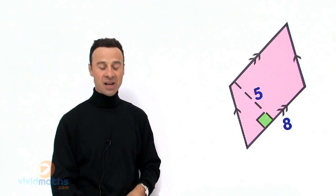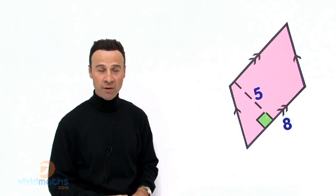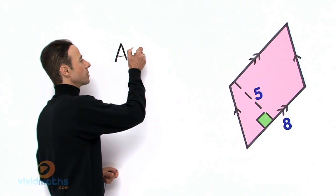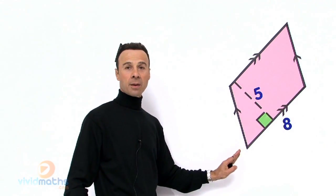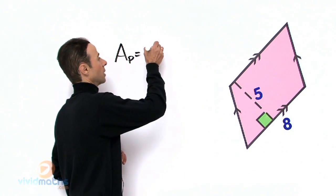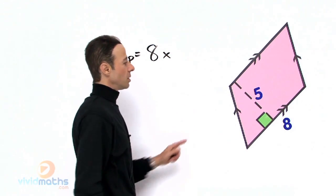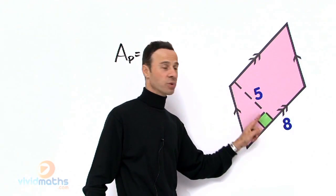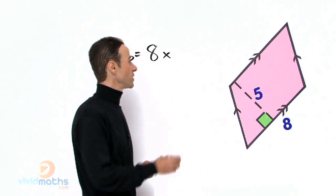Our job and our task is to work out the area of that. So area of a parallelogram, let's write it out, equals the length of the base times the perpendicular 90 degree right angle height which is the vertical height here which is 5cm.